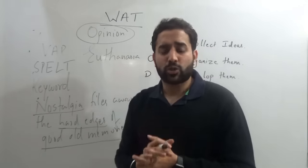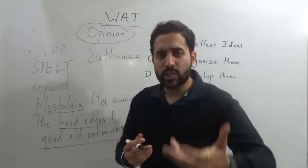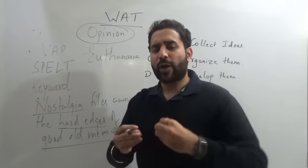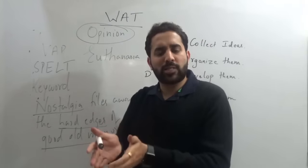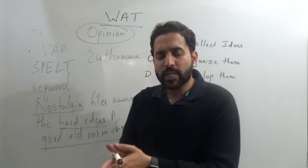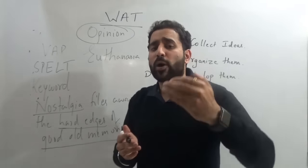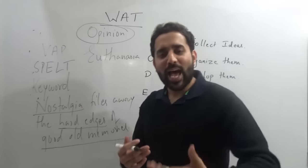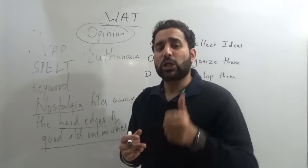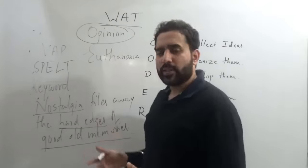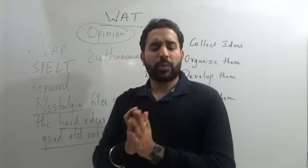For topics on the extreme side — such as politics or religion — make sure you take a neutral stand. If you have more positive points regarding the topic than negative ones, highlight the side with more points so you can provide more examples. This will make a better impression on the reader. This is something you really need to consider when it comes to your approaches.